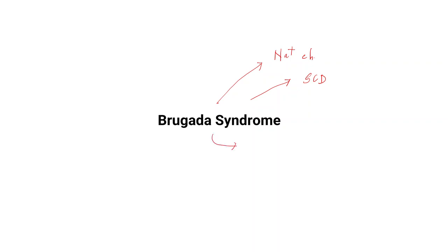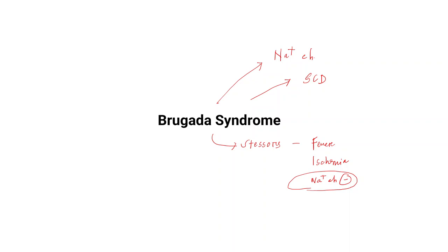Remember that in Brugada syndrome, the ventricular arrhythmias can be precipitated by some stressors like fever, ischemia, and some sodium channel blockers. If a patient with Brugada syndrome is given any sodium channel blocker drug, the ventricular arrhythmias may be precipitated.